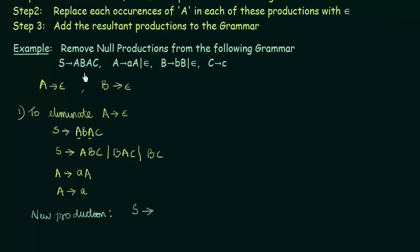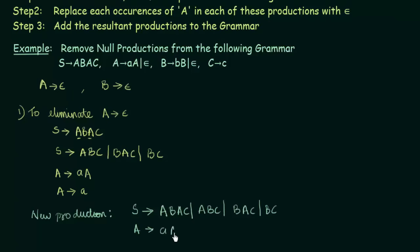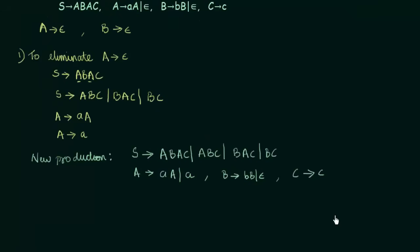Our updated production set after removing A gives epsilon is: S gives ABAC, ABC, BAC, and BC. A gives AA and also small a — the null production A gives epsilon is now removed. B gives BB and also epsilon. C gives small c. Now we move on to remove the second null production, B gives epsilon.